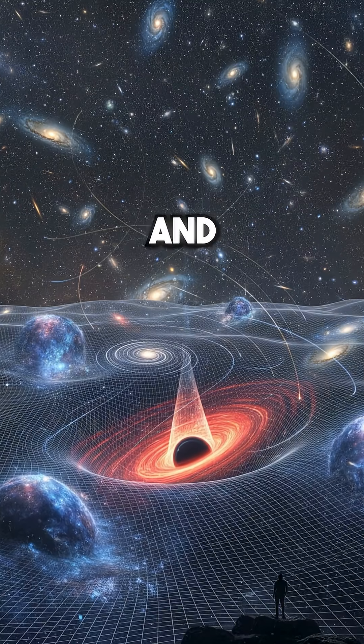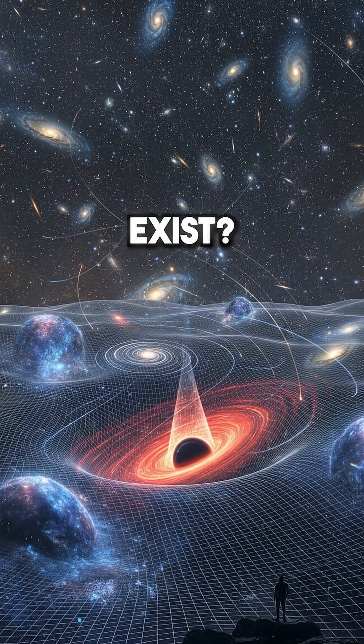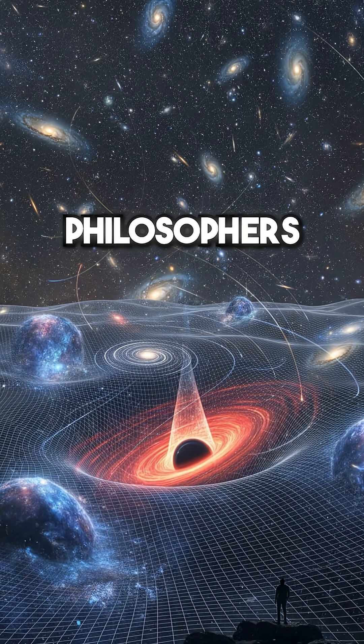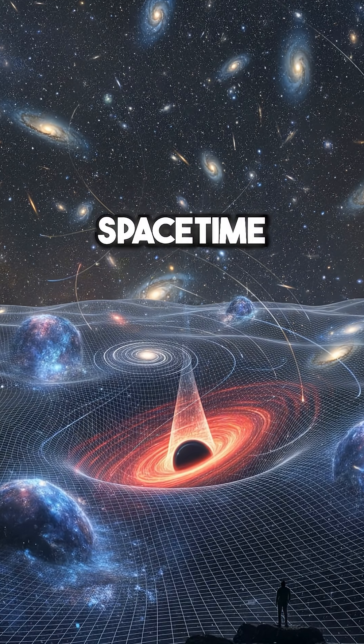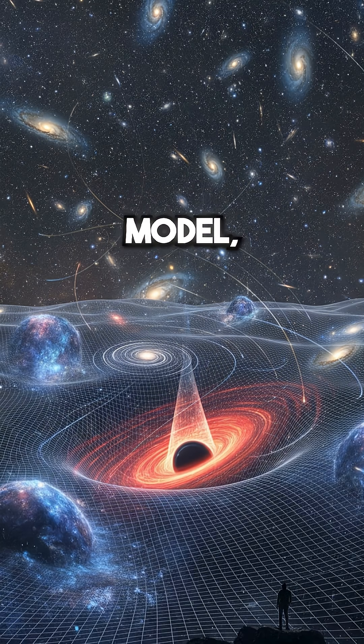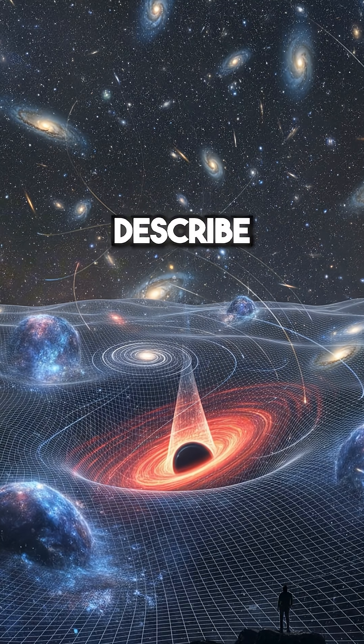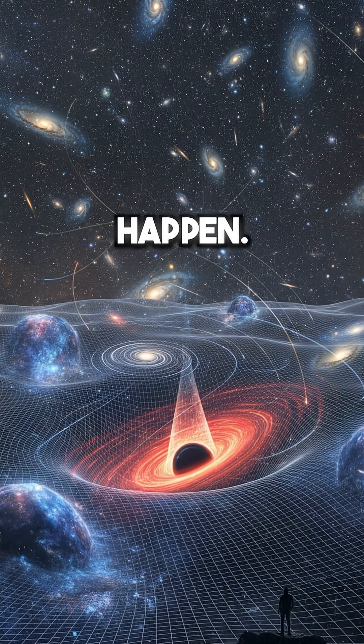What if everything you know about space and time doesn't actually exist? Some physicists and philosophers now argue that space-time isn't real at all. It's just a model, a map we use to describe where and when things happen.